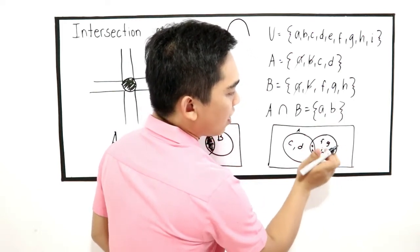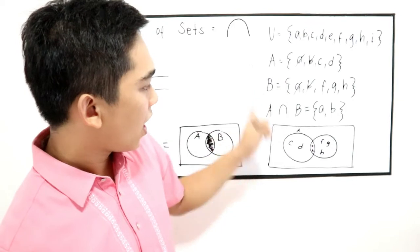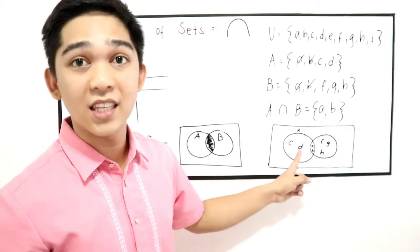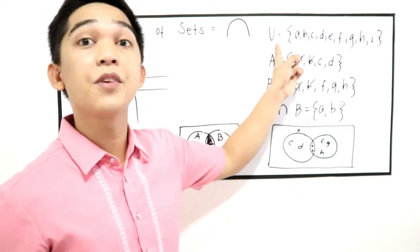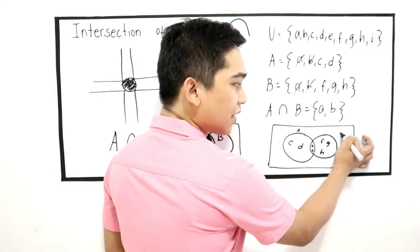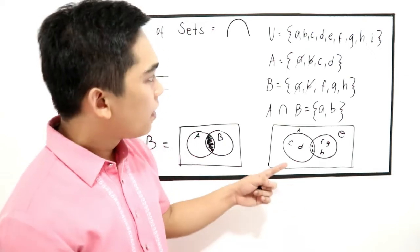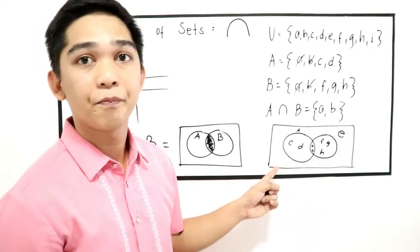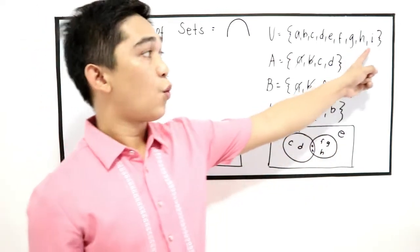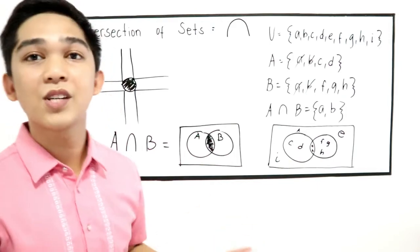Notice that E and I appear in our universal set but not in set A or B, so we write them outside the circles, inside the rectangle. That covers placing all elements correctly in the Venn diagram.